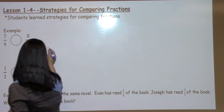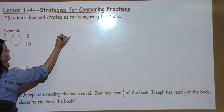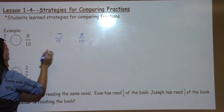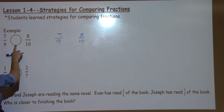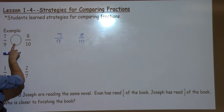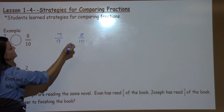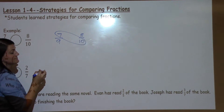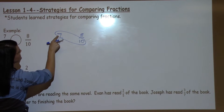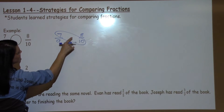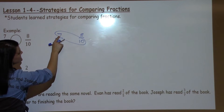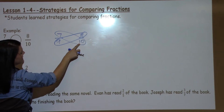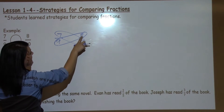The first problem is 7 ninths and 8 tenths, and this circle here is just where you put the comparison symbol to show which one is larger or smaller. So over here we draw butterfly wings — that's what we call them — around the numbers that are diagonal from each other. So we connect 7 and 10 in the butterfly wings, and 9 and 8.